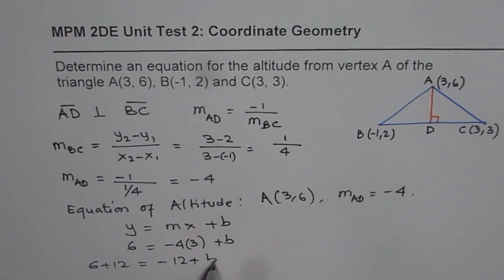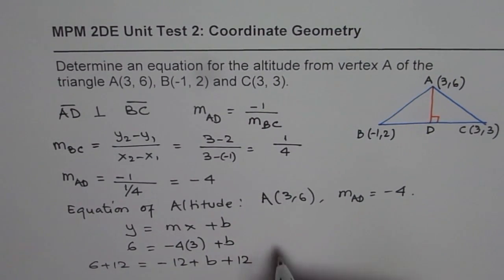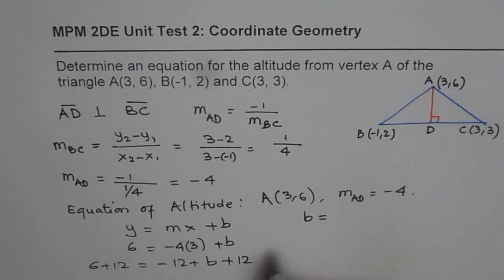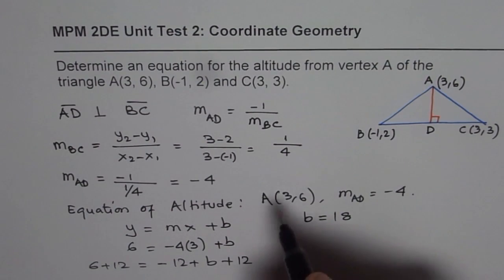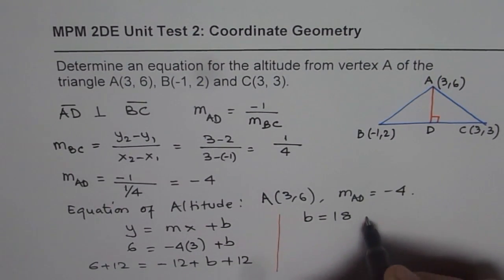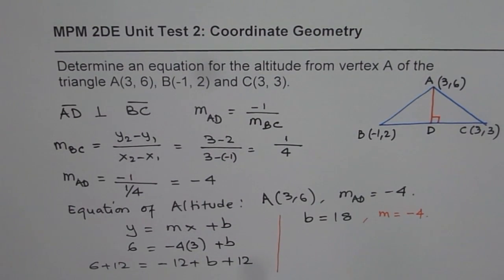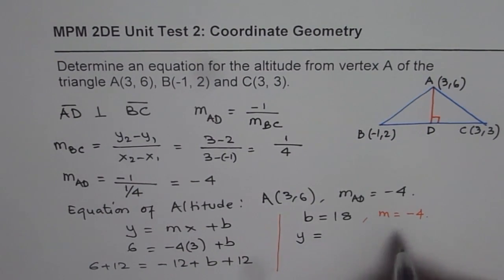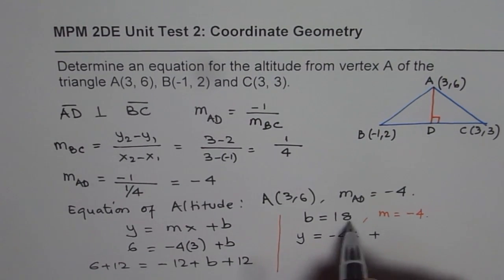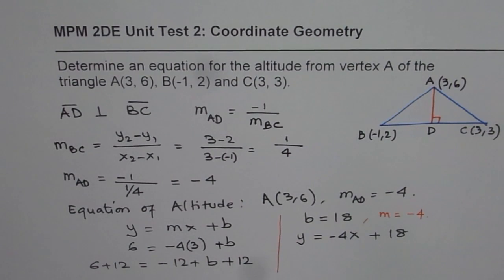-12 plus b plus 12, and that gives us the value for b. So we get b equals 18. So that is how we can find the y-intercept. We already know slope is -4. So therefore the equation of the line is y = mx, which is -4x plus y-intercept of 18. So that becomes the equation of the altitude.